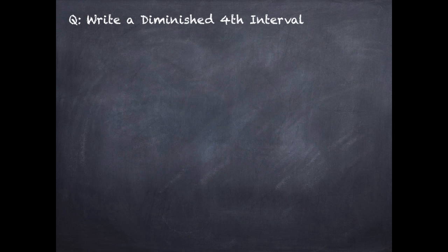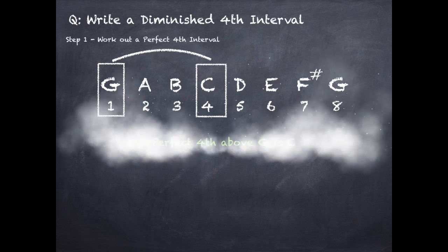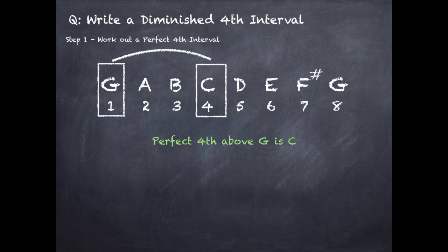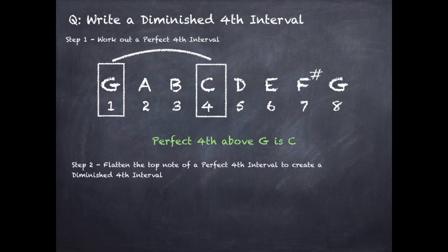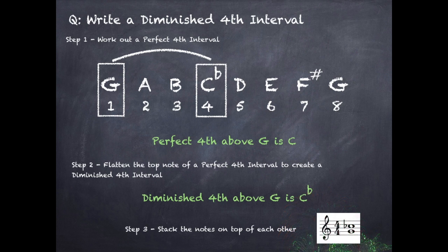To write a diminished fourth interval, step 1: work out a perfect fourth interval. We go from the first note of the G major scale, which is G, to the fourth note, which is C — perfect fourth interval is G to C. Step 2: create a diminished fourth by flattening the top note of the perfect fourth, so C becomes C flat — diminished fourth is G to C flat. Step 3: stack these notes on the stave. It's a three-step process.